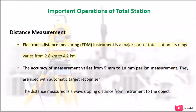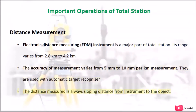The Electronic Distance Measuring (EDM) instrument is a major part of Total Station. Its range varies from 2.8 km to 4.2 km. The accuracy of measurement varies from 5 mm to 10 mm per km. They are used with an automatic target recognizer. The distance measured is always the sloping distance from the instrument to the object.